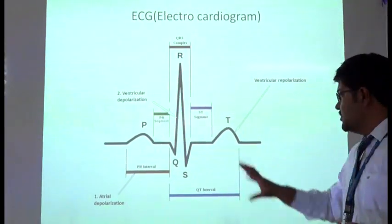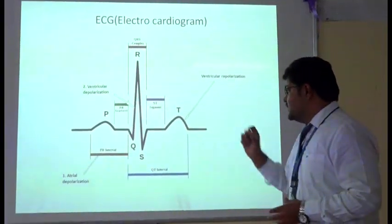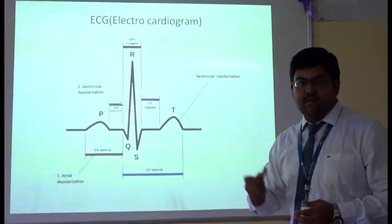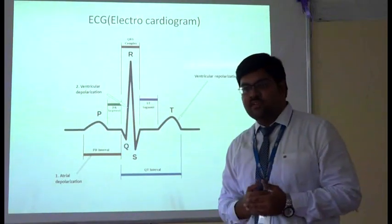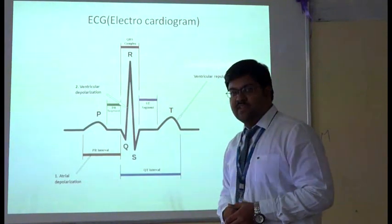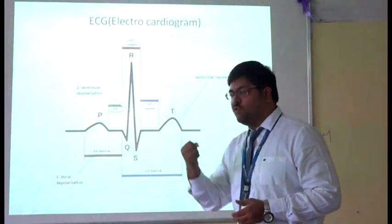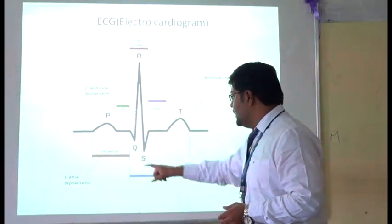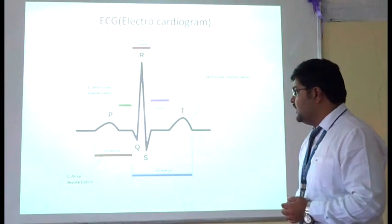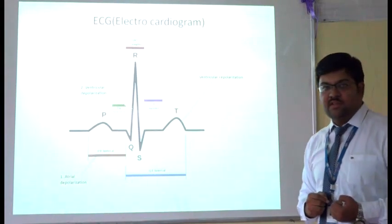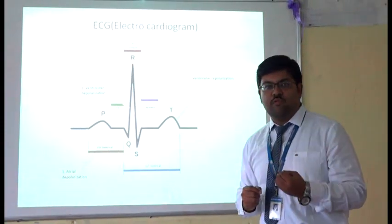A typical ECG signal has a P wave, QRS wave, and T wave. Each wave represents a particular heart function. The P wave represents atrial depolarization — the contraction of the atrium — which causes blood to flow from the atrium to the ventricles. The QRS wave represents ventricular depolarization, which is the contraction of the ventricles. The T wave represents the relaxation of the ventricles.